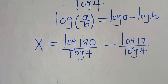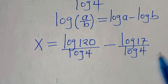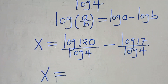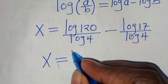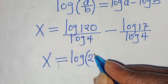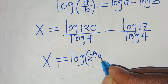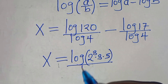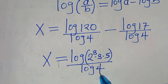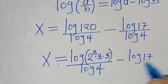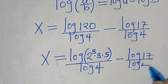Now we can express 120 as 2 to the power of 3, times 3, times 5. So x equals log(2³ × 3 × 5) divided by log 4, subtract log 17 divided by log 4.